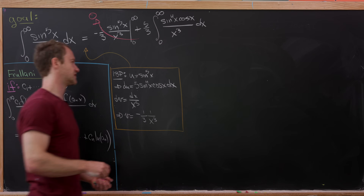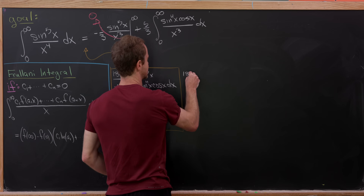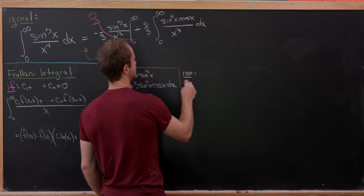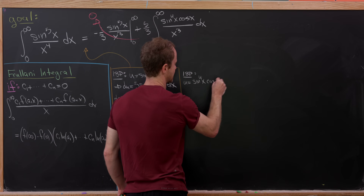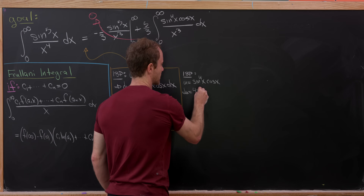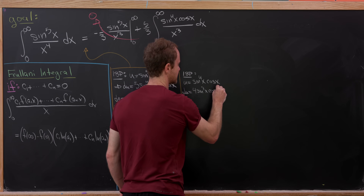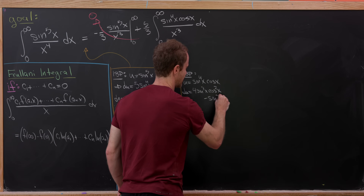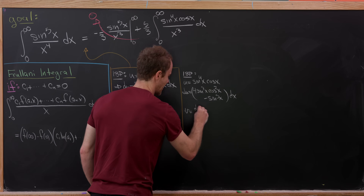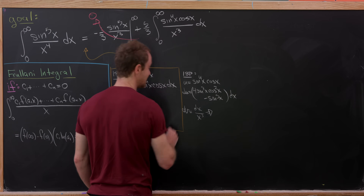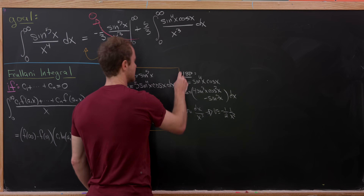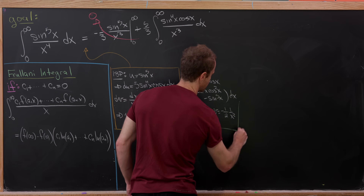We attack that remaining integral with another round of integration by parts. Take u = sin⁴(x)cos(x) and dv = dx/x³. Then du = [4sin³(x)cos²(x) − sin⁵(x)]dx, and v = −(1/2)(1/x²).